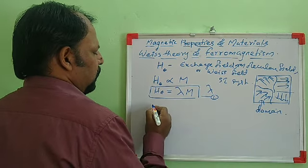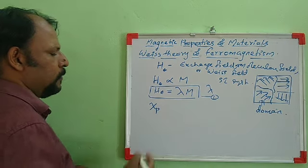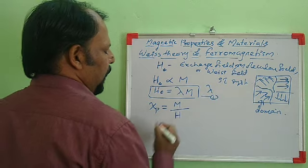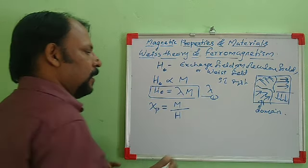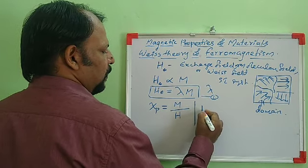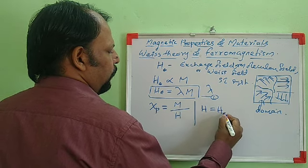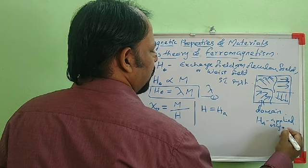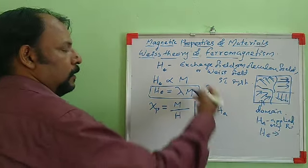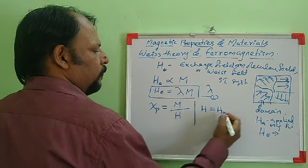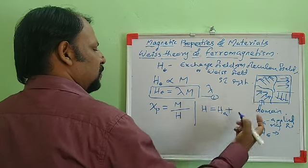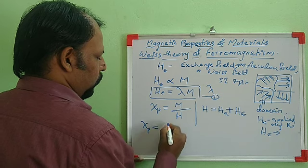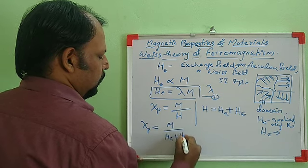When we consider the paramagnetic susceptibility χ_P, it can be written as the ratio of magnetization to the magnetizing field. When we apply an external magnetic field H_A, the total field H will be the combination of the applied magnetizing field H_A and the exchange field H_E. So the paramagnetic susceptibility is χ_P = M / (H_A + H_E).